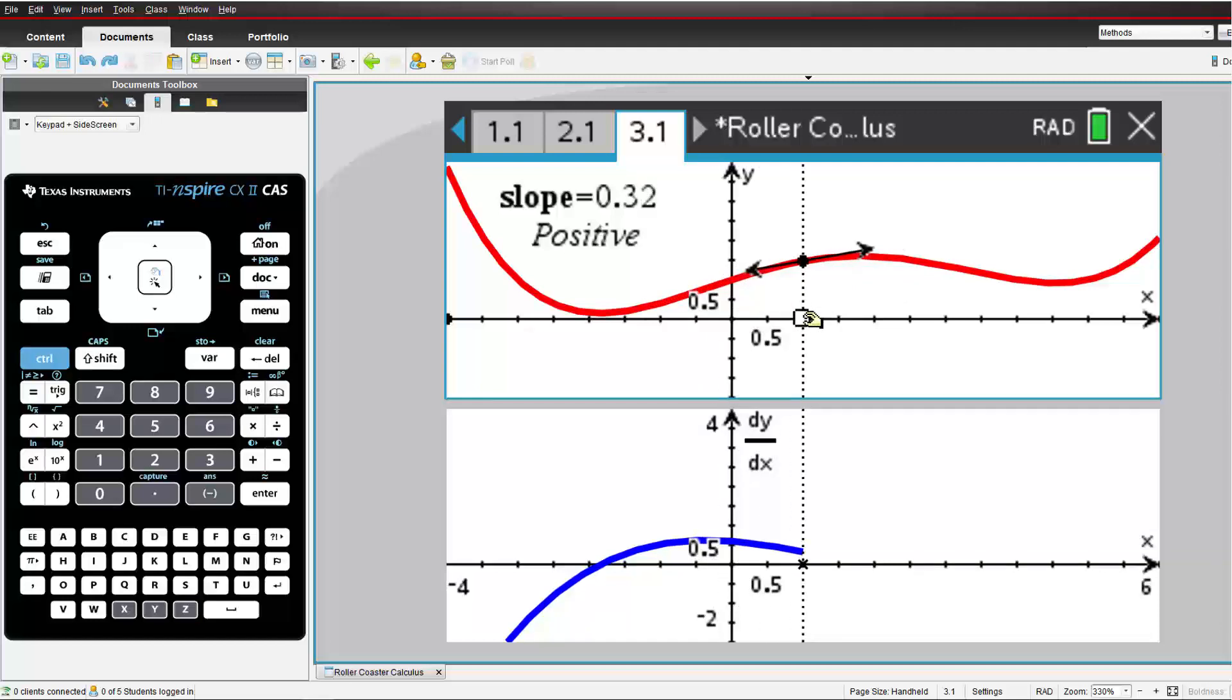As we progress towards the next turning point, our gradient function returns once again to the x-axis, where dy dx is equal to zero.